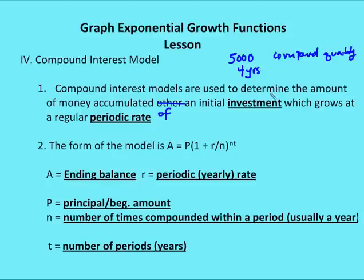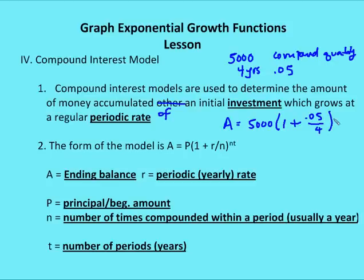We'll say the annual rate is 5%. Compounding quarterly means four times a year, so n equals four. The number of years is four, the initial investment is $5,000, and the yearly rate is 5% — you'd be lucky to get this rate at a bank right now.